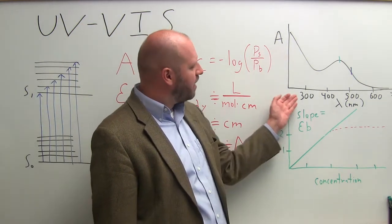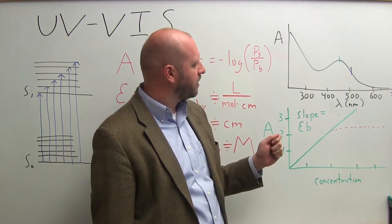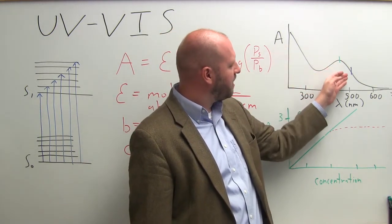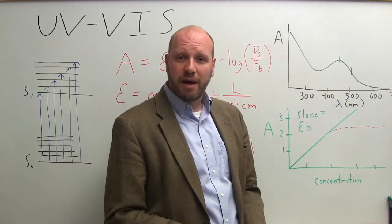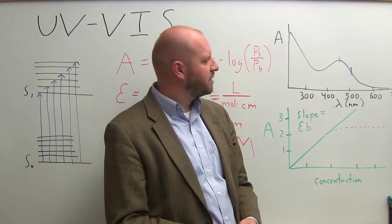If we scan the wavelength range, we collect a UV-Vis spectrum, where we plot absorbance versus wavelength on this axis. You can see this molecule absorbs here in the UV, and then we have a peak at around 450 nanometers. I can use this peak at 450 nanometers to quantify the concentration of analyte in my sample.